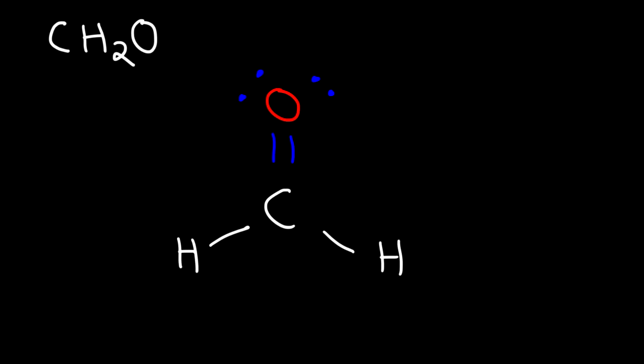So the only way we can put this Lewis structure together, where hydrogen has one bond, carbon has four, and oxygen has two, is drawing it in the way that you see it on the board as of now. So this is the Lewis structure of CH2O, also known as formaldehyde.